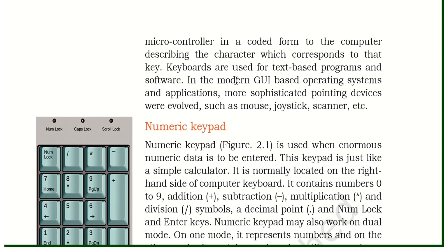What does GUI mean? The first operating system we had was CUI — Character User Interface. The current operating system is GUI — Graphical User Interface. Examples of GUI operating systems are Windows 95, Windows 98, Windows 7, Windows XP, Android — Android is the operating system of your phone. These are all operating systems. The first operating system was CUI.